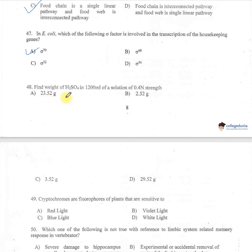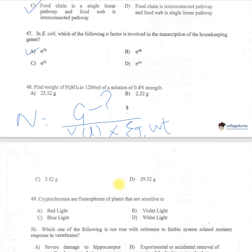Question number 48: Find the weight of H₂SO₄ (sulfuric acid) in 1200 ml of solution of 0.4 normal strength. The formula applied is: normality = gram solute divided by (volume in liters × equivalent weight). Normality is 0.4, volume is 1.2 liters, and equivalent weight for sulfuric acid is 49. Calculating, the weight of sulfuric acid is option A: 23.52 grams.